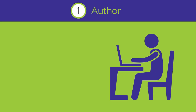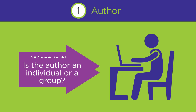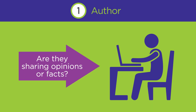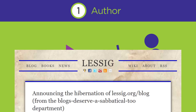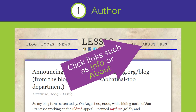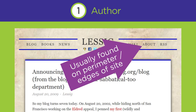When you're looking at a website, first consider the author. Ask yourself: who wrote this information? What can you gather about the author's background? Is the author an individual or a group? Is the author an expert on this topic? Are they sharing opinions or facts? How does all of this shape what the author has written? You might have to dig to find out about the author. If you don't see the author's name, click on links such as info or about. These links are usually found on the perimeter or edges of the website and they may lead to information about the author.